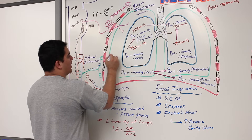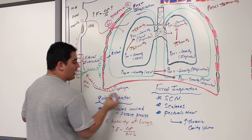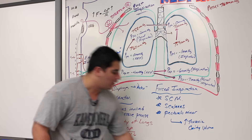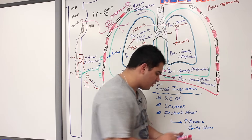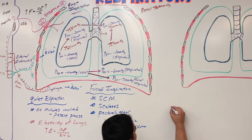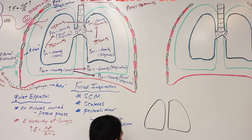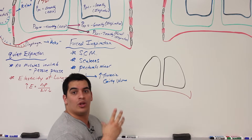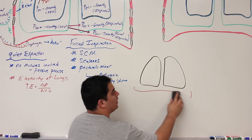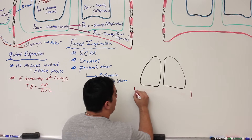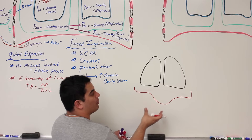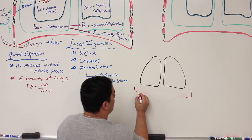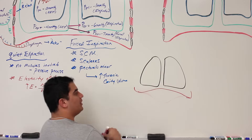When the muscles relax, the diaphragm — which was depressing downward during inspiration, increasing thoracic cavity volume — goes back up. The external intercostals, which were creating the bucket handle movement pulling the ribs outward and the sternum upward and forward, now recoil. Both of these cause the thoracic cavity volume to decrease, and by Boyle's Law, when volume decreases, pressure increases.